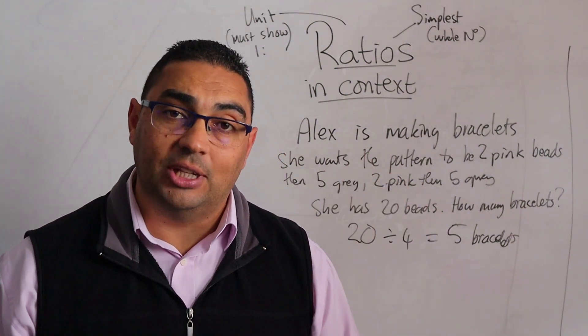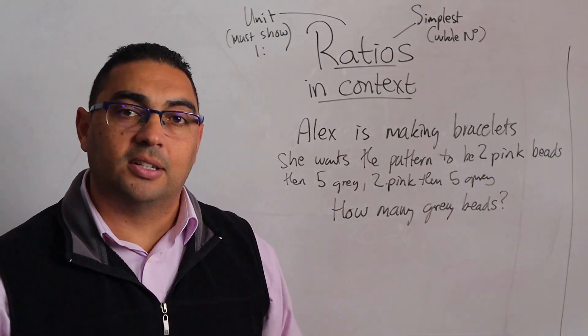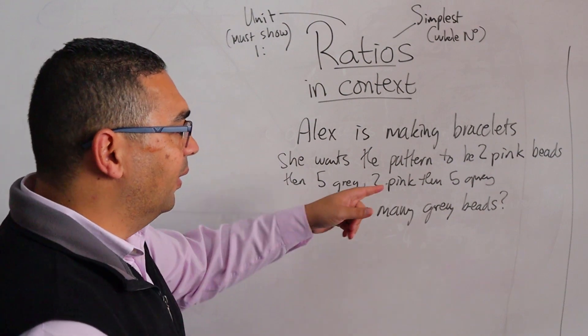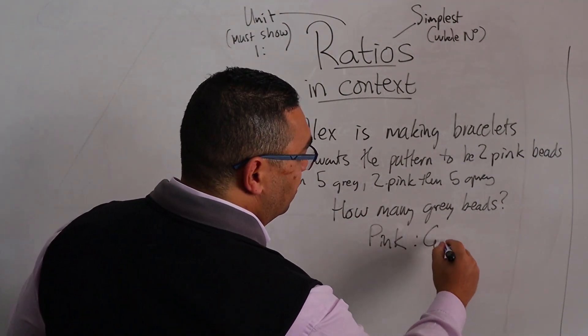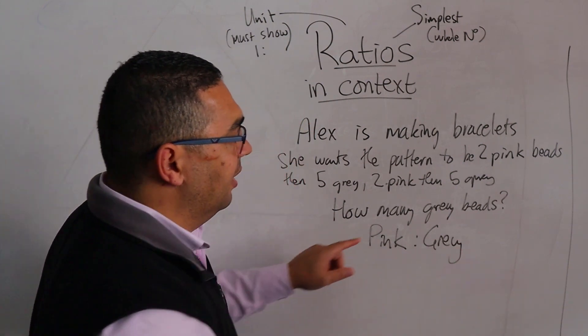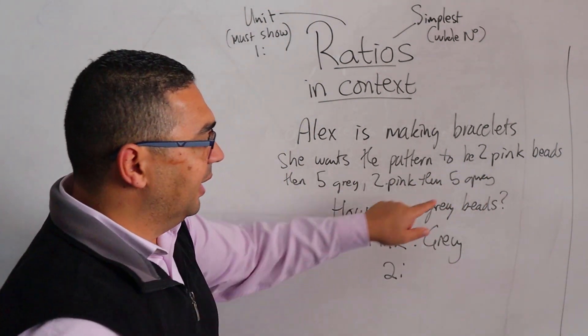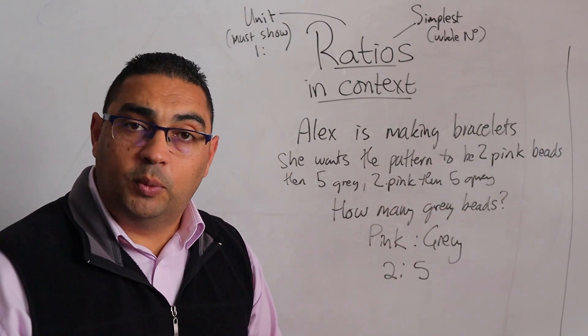Now they ask us how many gray beads will she need. Well, for that we need to look at our ratio. What did we have? We had pink beads two, gray beads, and what did they say? For every two pink beads that we have, there's going to be five gray beads.